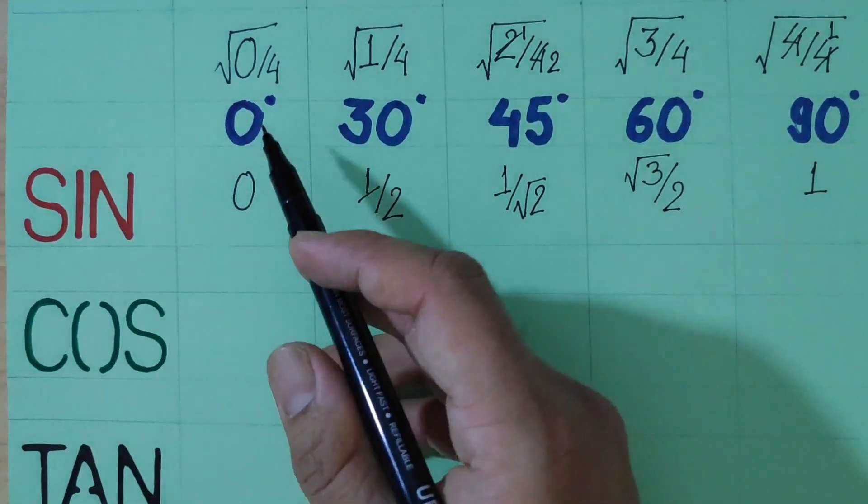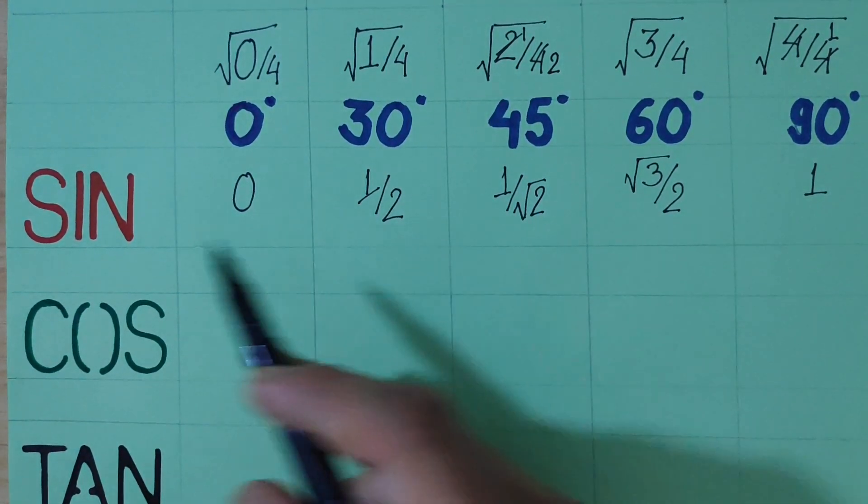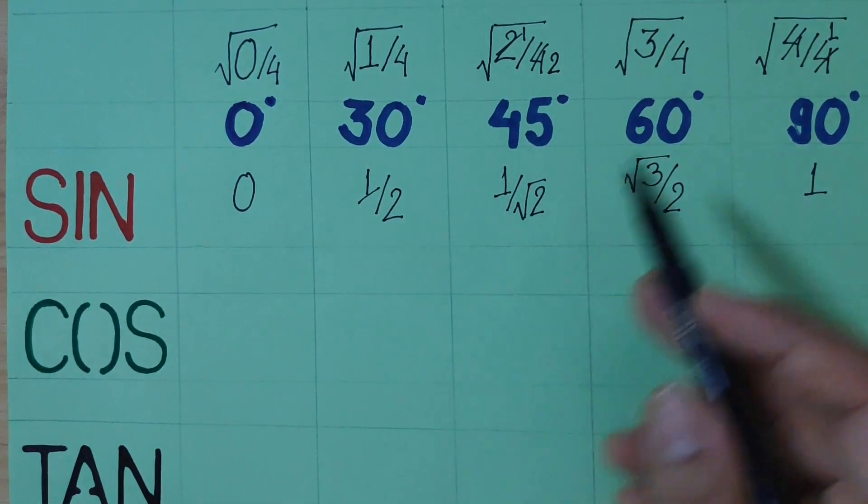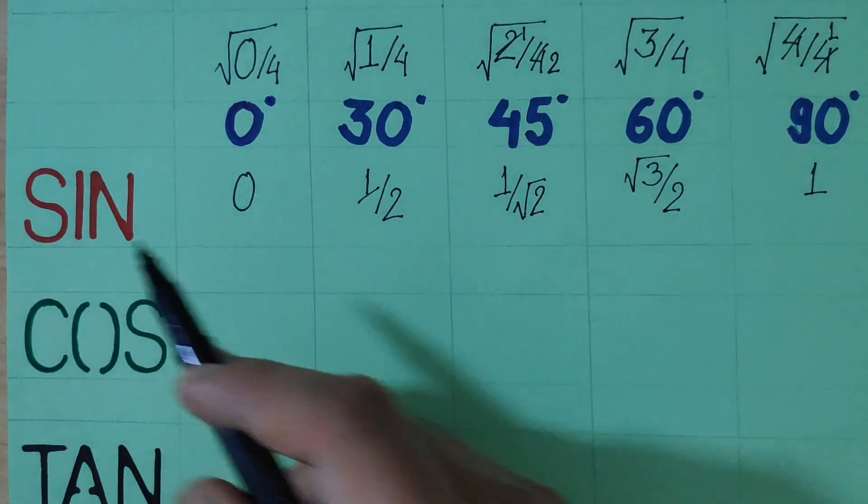Now sin 0 is 0, sin 30 is 1 by 2, sin 45 is 1 by root 2, sin 60 is root 3 by 2, and sin 90 is 1.